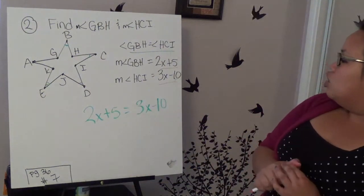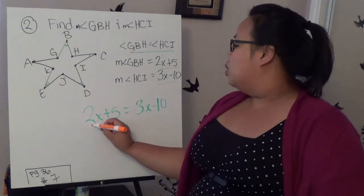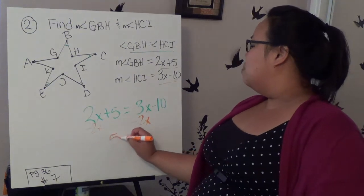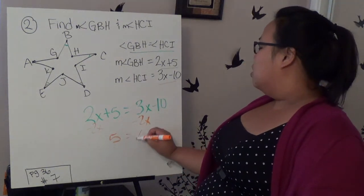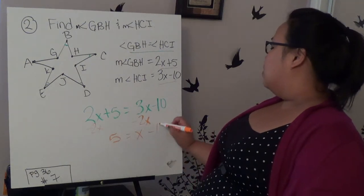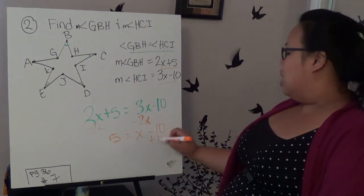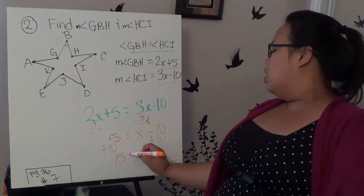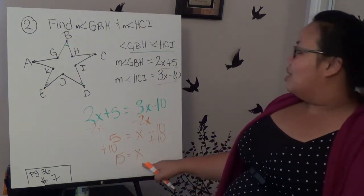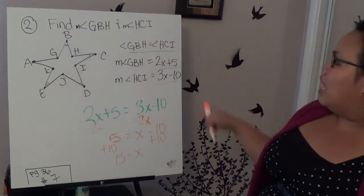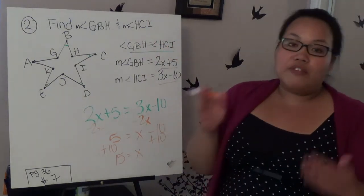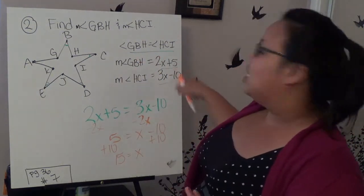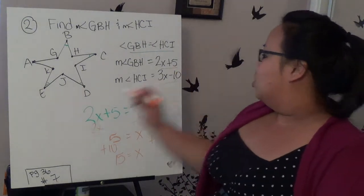Now there's no like terms to combine, so I'm going to start isolating the x. I'm going to bring the 2x to this side, so subtract 2x. 3x minus 2x gives me 1x, or I can just write x. And I just bring down the 5 and bring down the negative 10. Now I need to add 10 to both sides. This gives me 10 plus 5, which is 15 equals x. So that's my x, but it's not asking me for x, it's asking me to find the angle. The good thing is, because they're equal, if I find one, then I find the other.